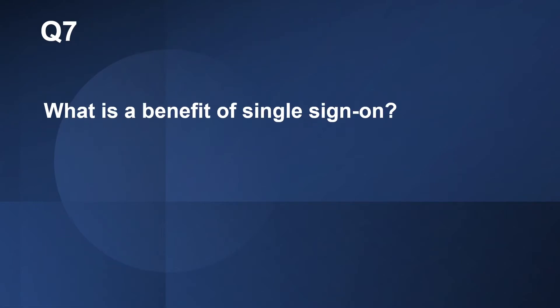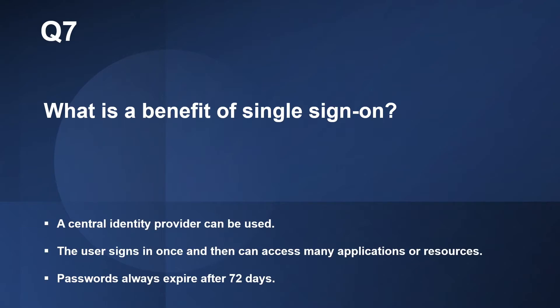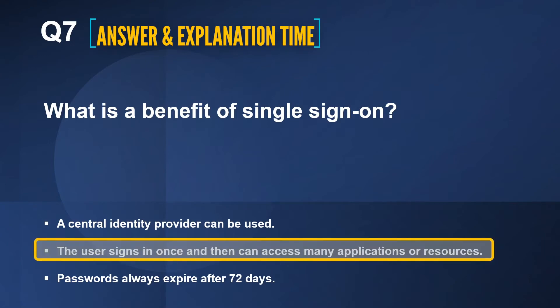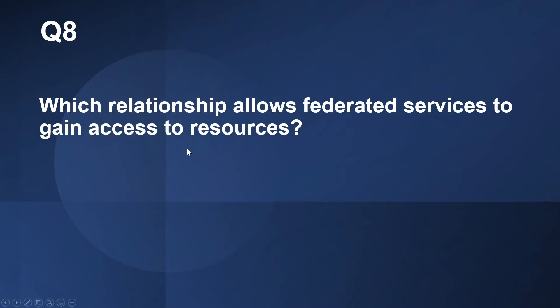Question number seven: What is a benefit of single sign-on? The options are: a central identity provider which can be used, the user signs in once and then can access many applications or resources, or a password always expires after 72 days. The correct answer is the user signs in once and then can access many applications or resources. With single sign-on, a user signs in once and can then access a number of applications or resources.